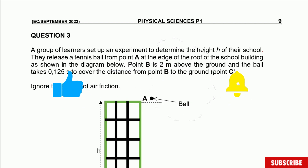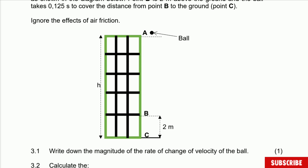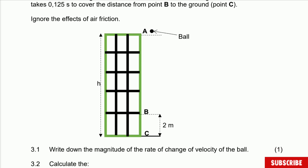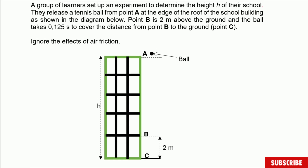A group of learners set up an experiment to determine the height of the school. They released a tennis ball from point A at the edge of the roof of the school building, as shown in the diagram. Point B is 2 meters above the ground, and the ball takes 0.125 seconds to cover the distance from B to the ground, point C. Ignore the effect of air friction. Point C is the ground, point B is 2 meters above the ground, and point A is at the roof of the school.